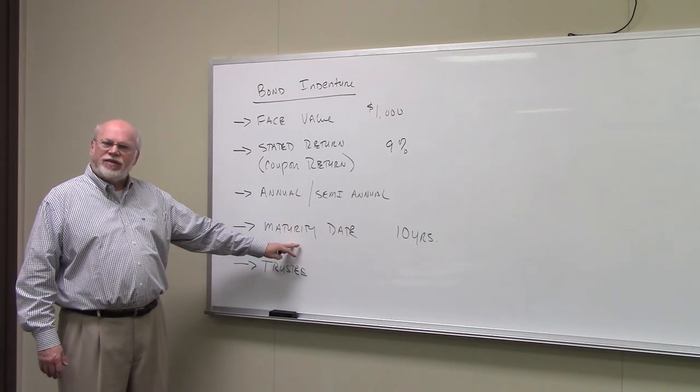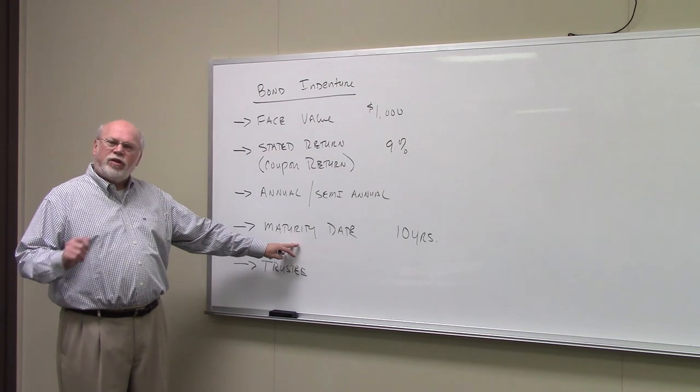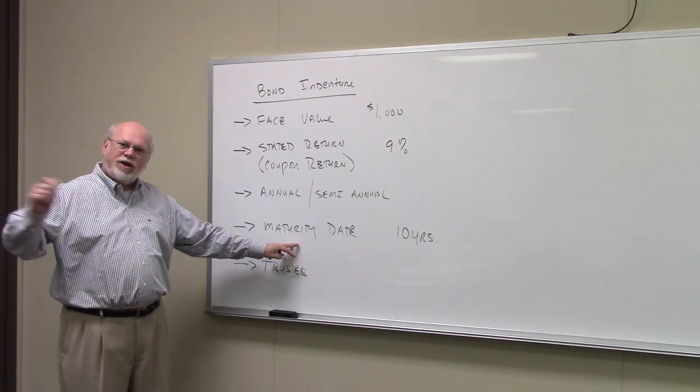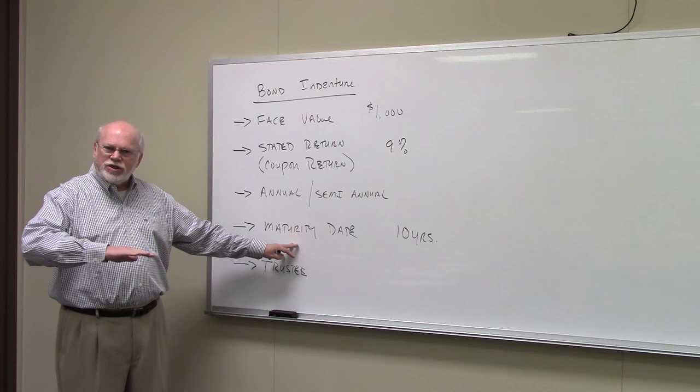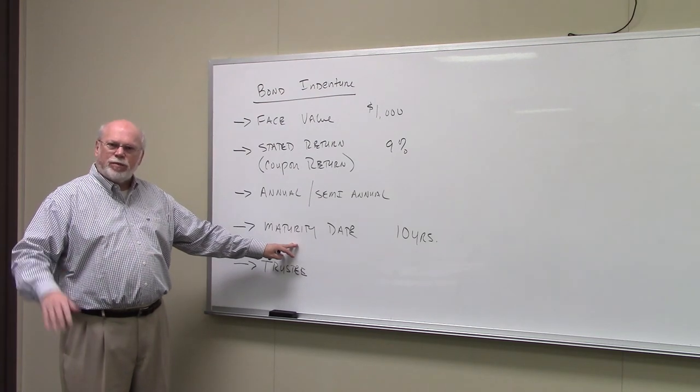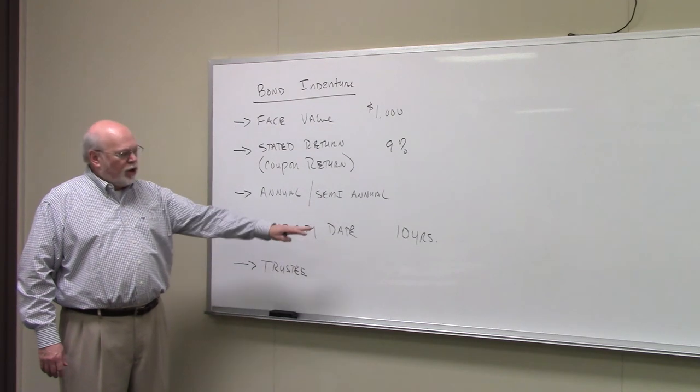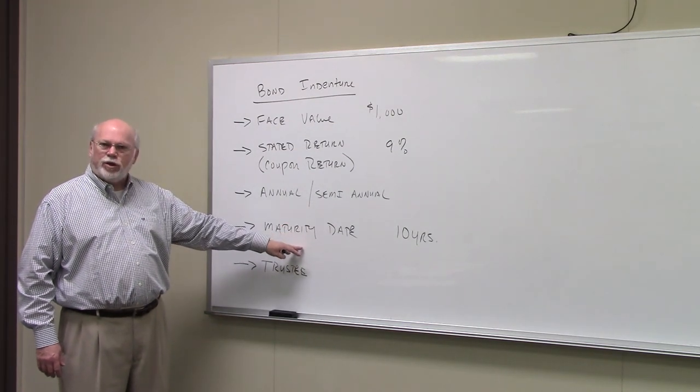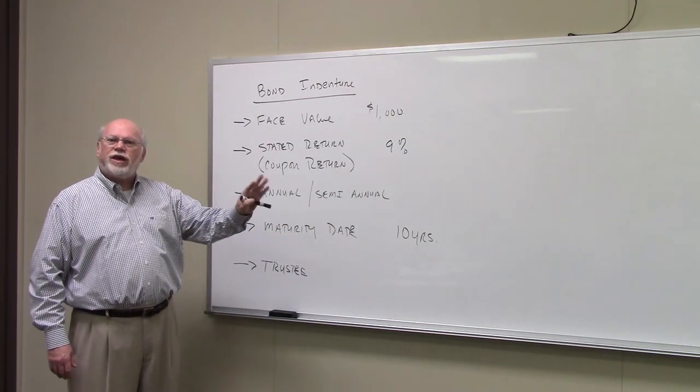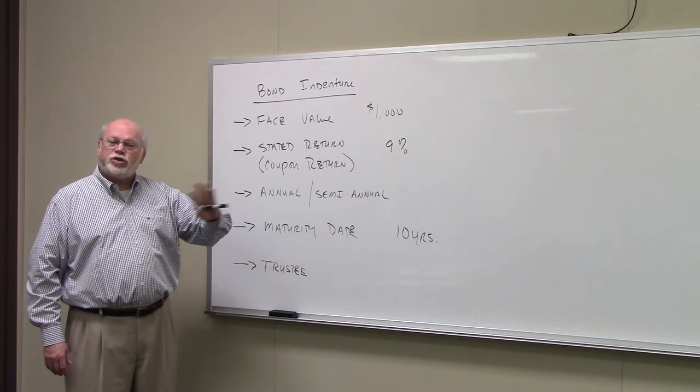In practice, this is date specific, and you have to figure out how long it is from now until then. We just simplify this process a little bit in classes, on exams, and things like that. When we tell you it's a 10-year bond, we mean there's 10 years left on the life of the bond, 10 years to maturity.